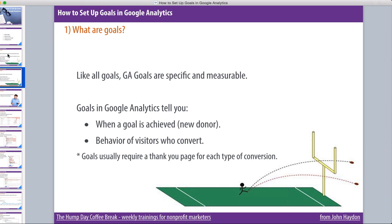Goals, like all goals, are specific and measurable. Goals in Google Analytics will tell you when a goal is achieved — for example, a new donor. You'll also be able to look at the behavior of visitors who convert. People that are giving you donations — where are they coming from? Are they coming from Facebook, Twitter? What campaigns are resonating? What campaigns are working that convert the best for our organization?